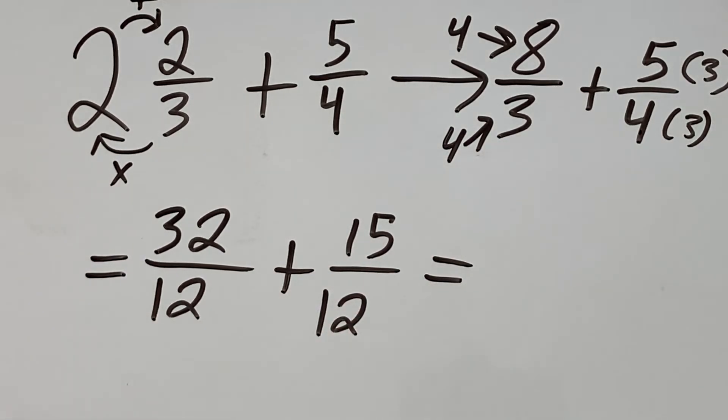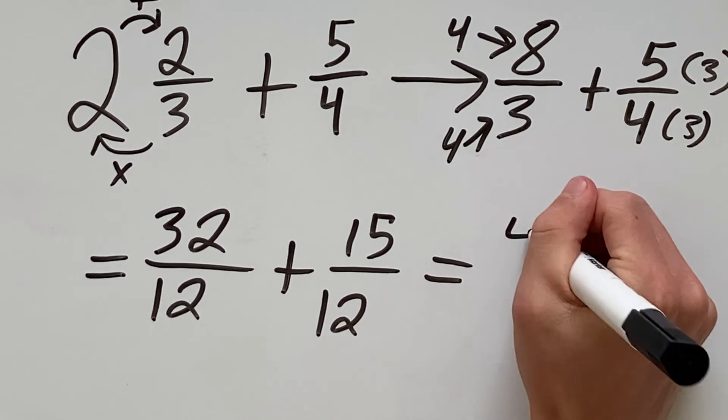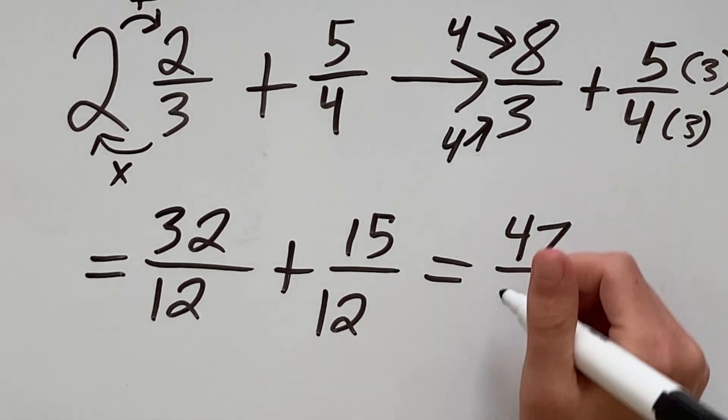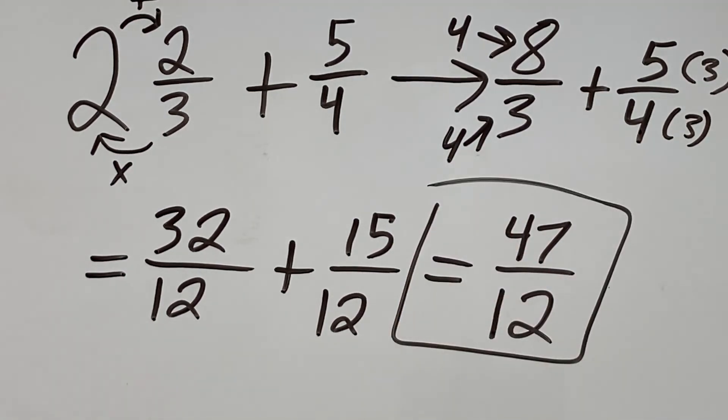And the last step is to add these fractions together. We have 32 plus 15 which gives us 47 and our denominator will stay as 12. And you just learned how to add a mixed number with an improper fraction.